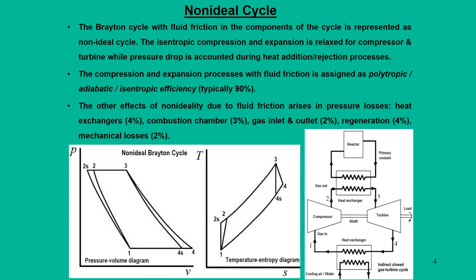Now let us understand what non-idealness means. Non-idealness is mainly associated with the fact that isentropic compression and expansion are relaxed in compressors and turbines. We introduce the term efficiency — called polytropic efficiency, adiabatic efficiency, or isentropic efficiency — for both turbines and compressors. We also introduce pressure drop accounted for during heat addition or heat rejection processes.